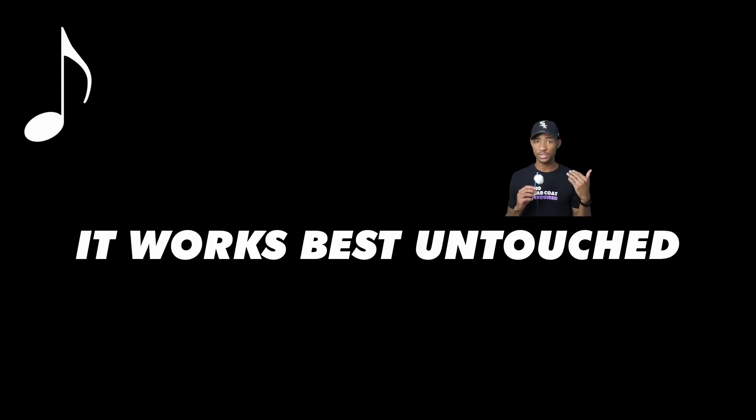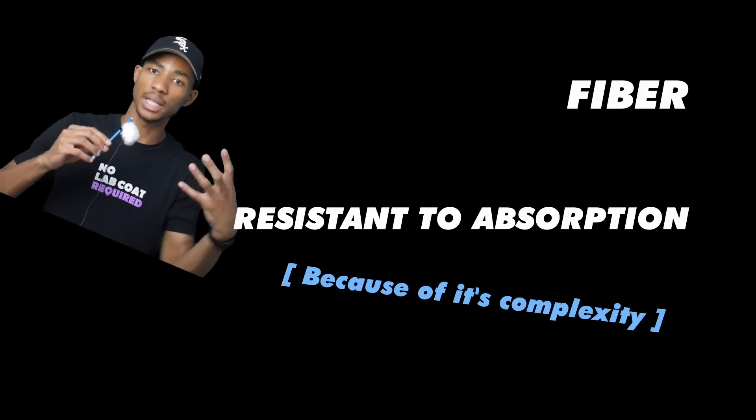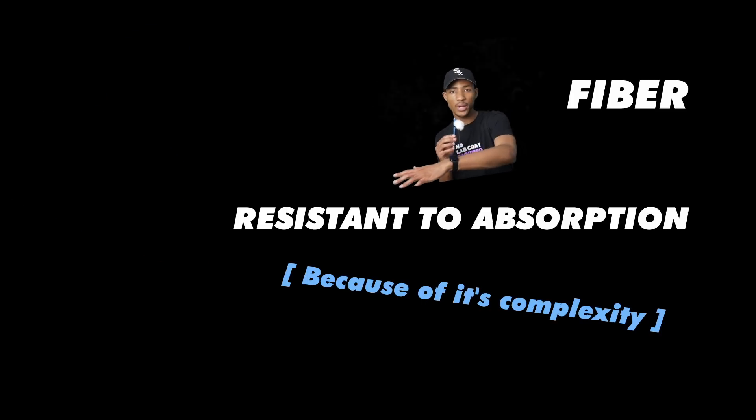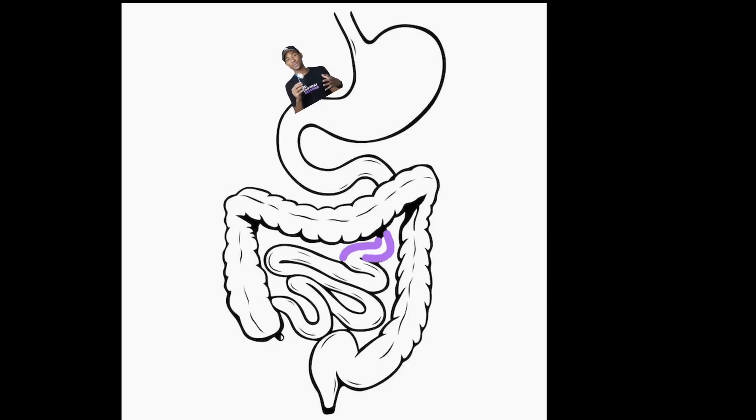The number one rule of fiber: it works best untouched. Fiber is cool because it's resistant to absorption due to its molecular complexity. It interacts with water and becomes this viscous gel-like substance that never really gets into the blood. But it actually coats the entire area where absorption does take place. And what this does is it slows everything down significantly.